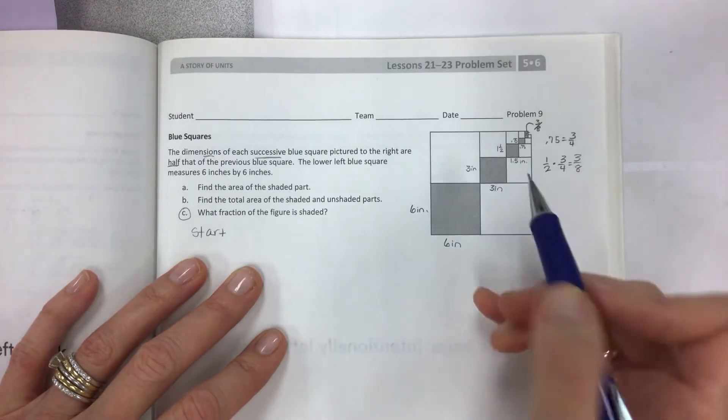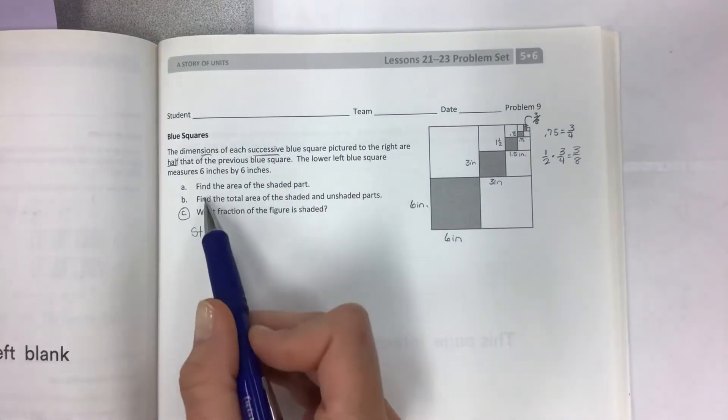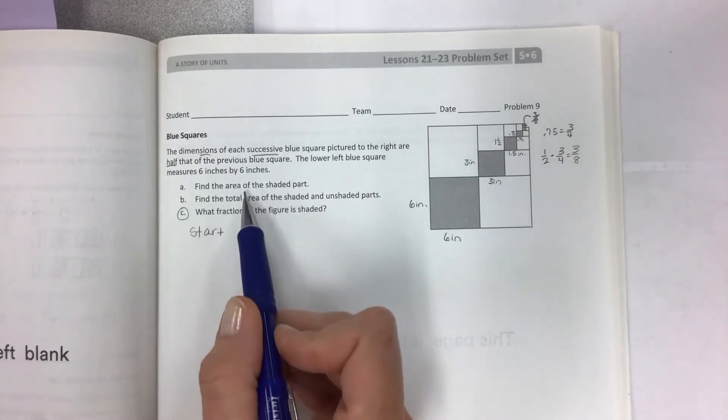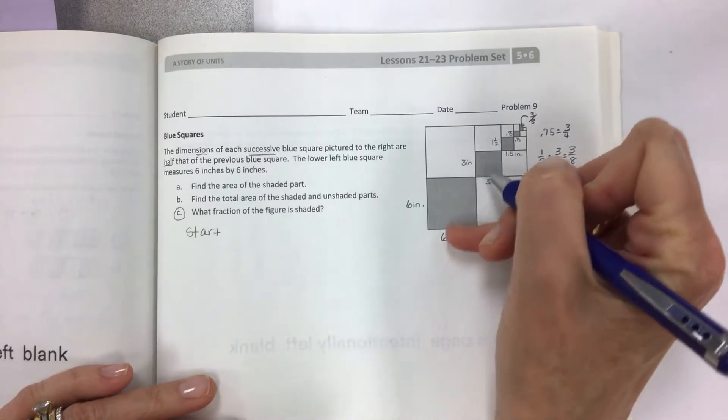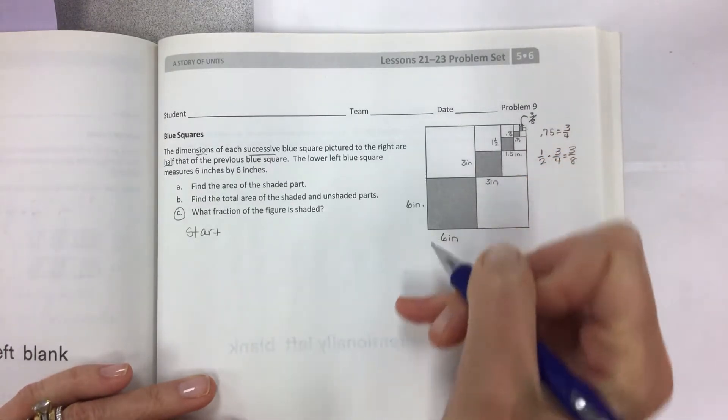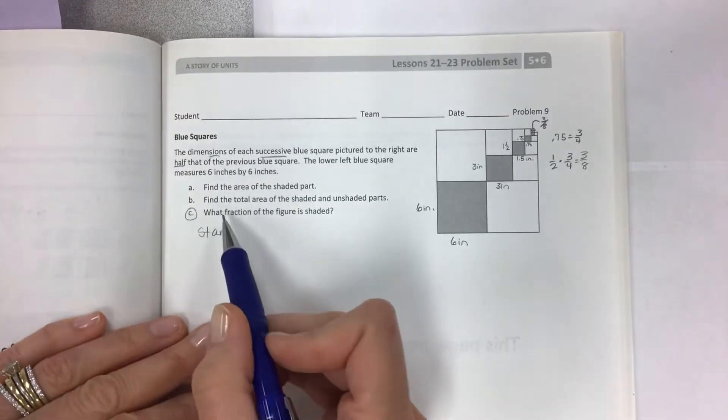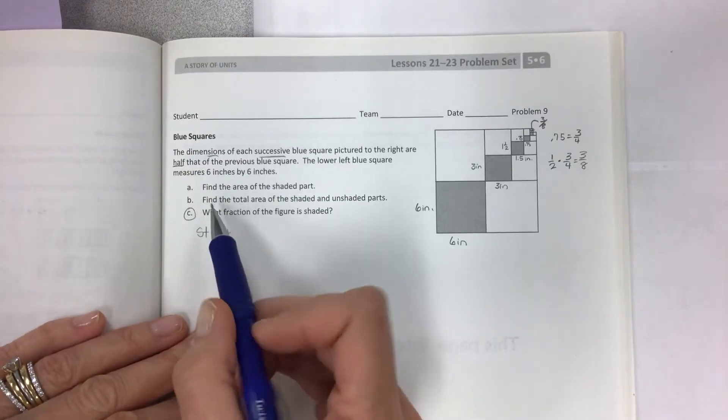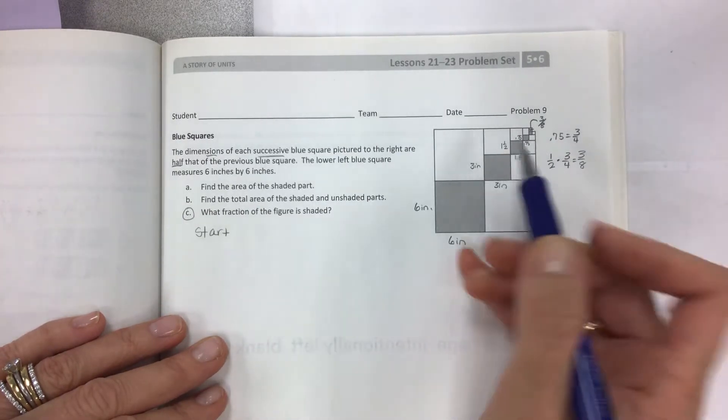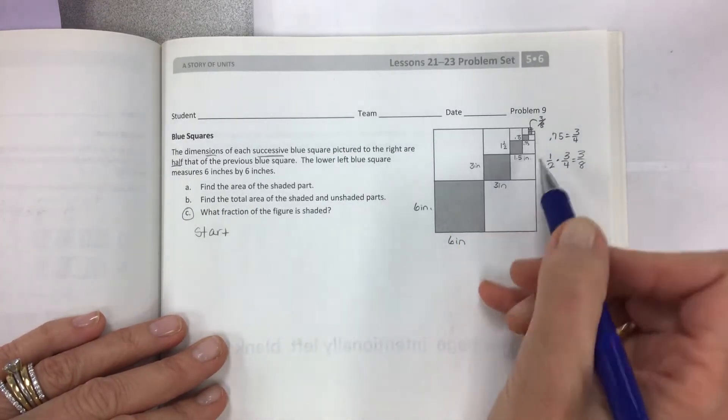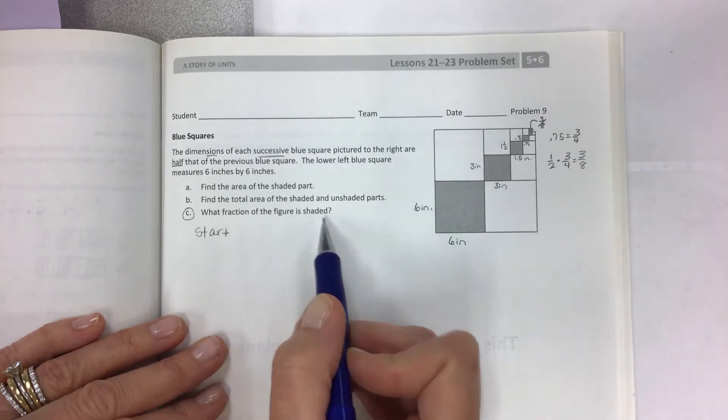Now we have to find multiple things here. First of all, the area of the shaded part, so what they mean is the area of all the shaded pieces. Let's take a look at all the questions and then I want to show you something important. B says find the total area of the shaded and unshaded parts, and then C says what fraction of the figure is shaded.